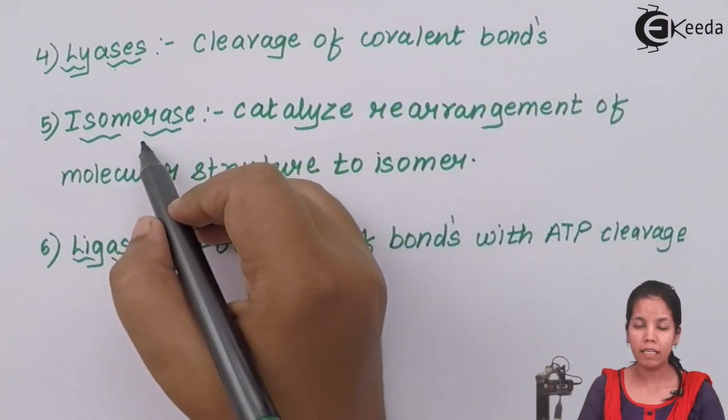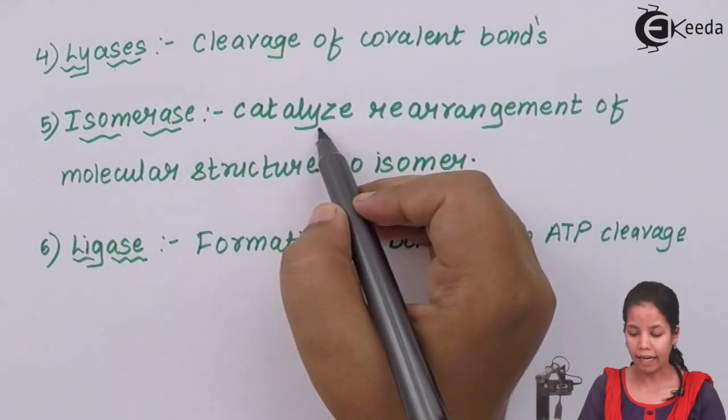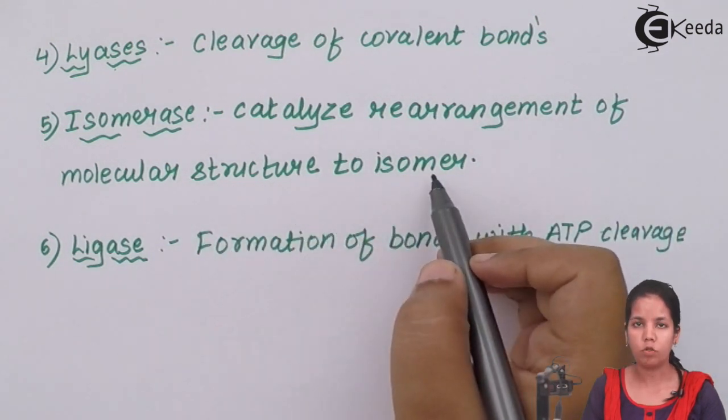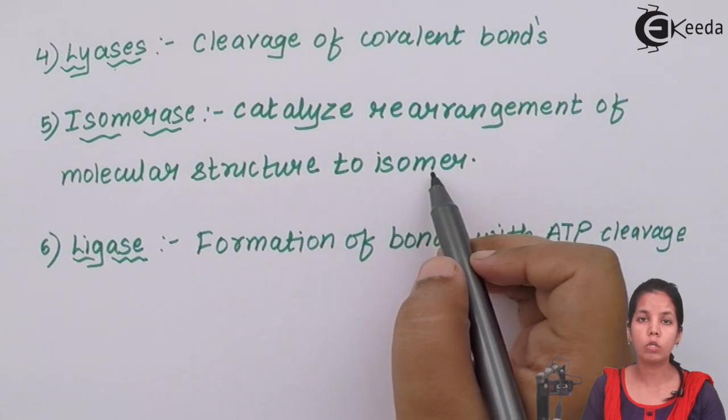The next enzyme is isomerase. They catalyze rearrangement of molecular structures to isomers. Basically, for the conversion of glucose to fructose or glucose 6-phosphate to fructose 6-phosphate. During glycolysis reaction, isomerase enzyme or the process of isomerization is used.